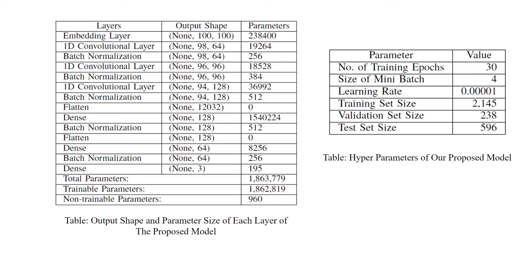This shows the output shape and parameter size of each layer of the proposed model. As you can see, the total number of parameters is only 1.8 million. These are the hyperparameters used for this dataset: training set size, validation size, test size, epochs, mini-batch size, and learning rate.